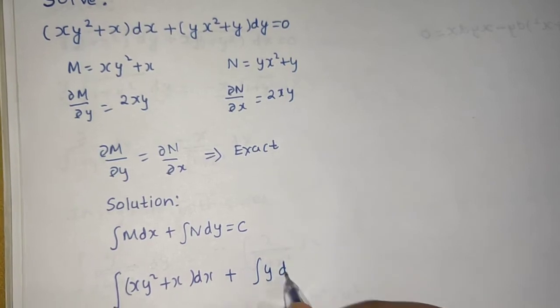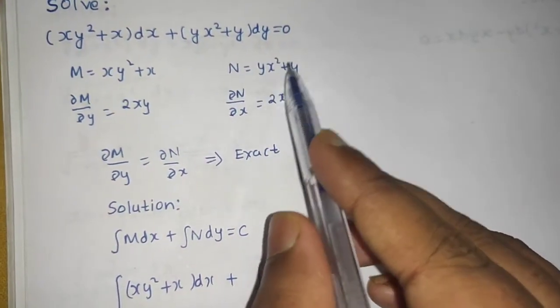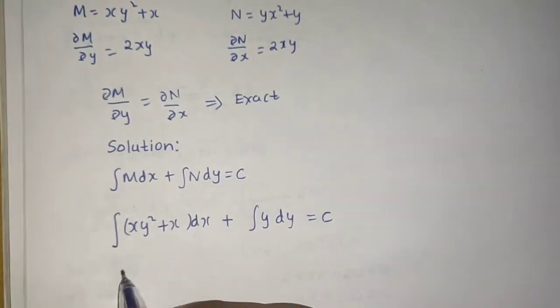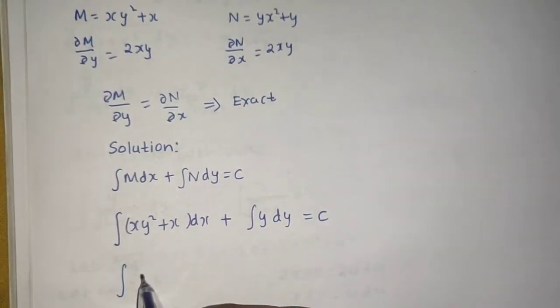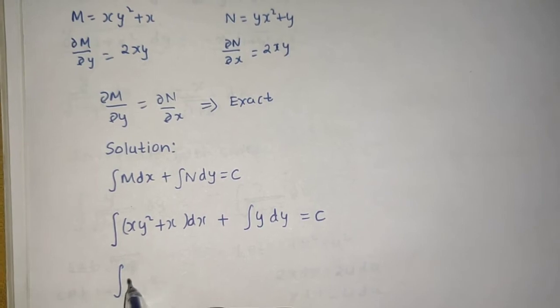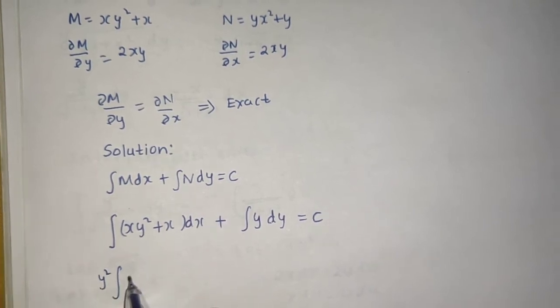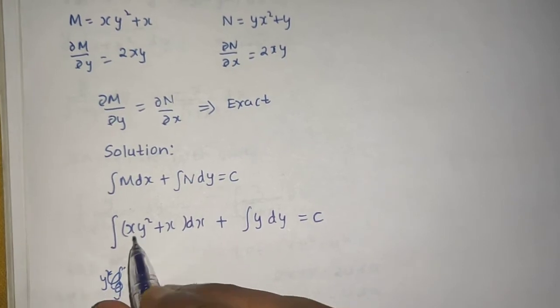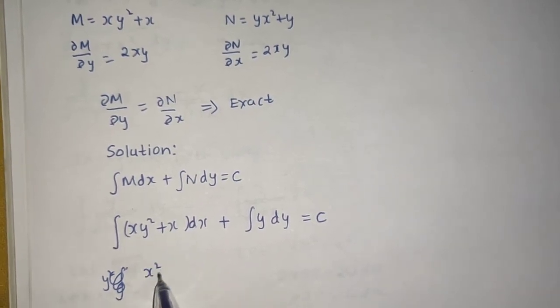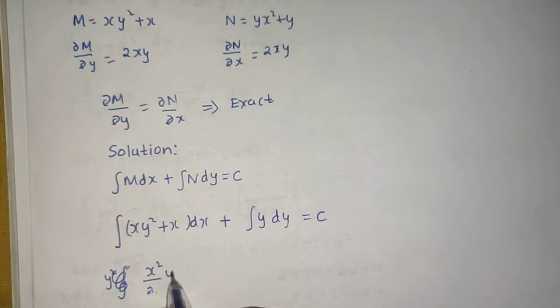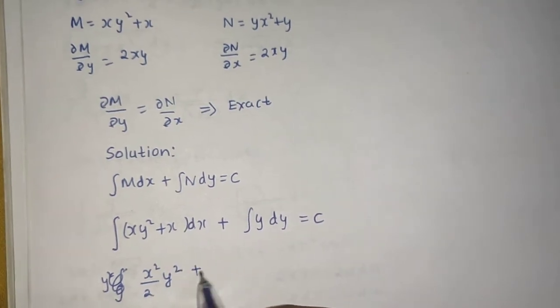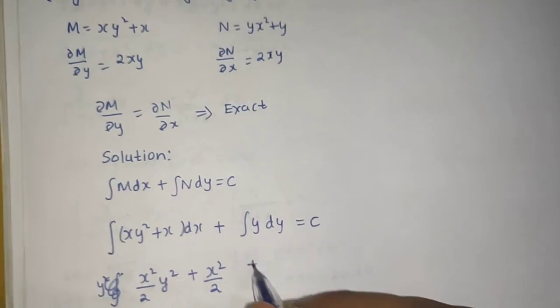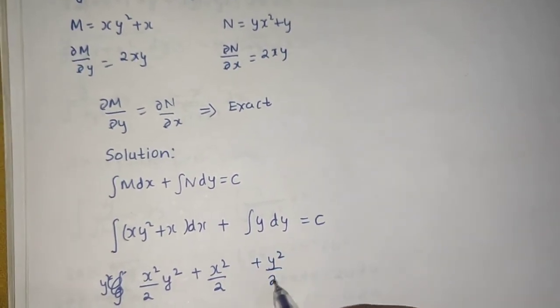Now y² is constant, you can take that out. Directly I am doing integration: integration of x is x²/2, y² was constant. Integration of x is again x²/2. Integration of y is y²/2 equals to C.